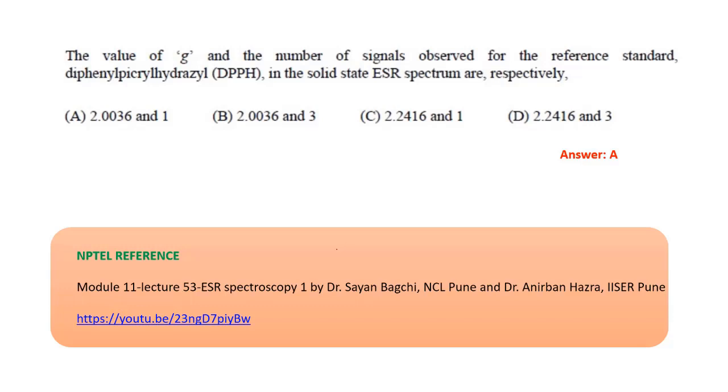As we already discussed, the value of g is 2.003. There are only two options with g value 2.003: A and B. So we can cancel options C and D. When we look at the number of ESR signals in solid state, it was 1. So we can rule out option B. Therefore, the answer to this question is A.